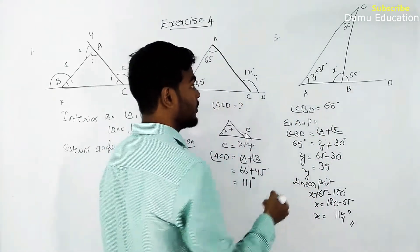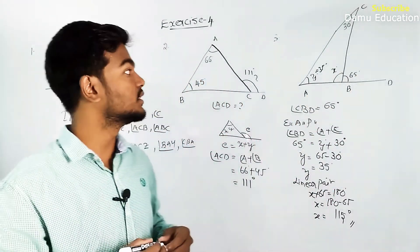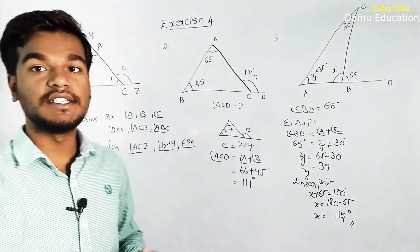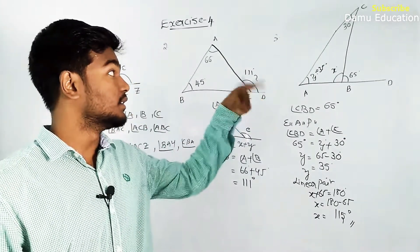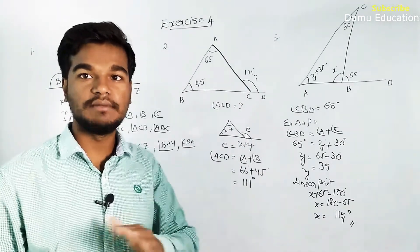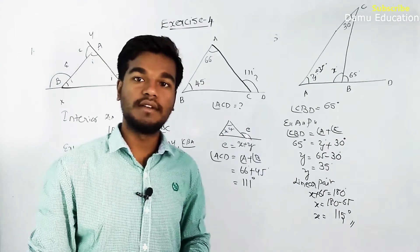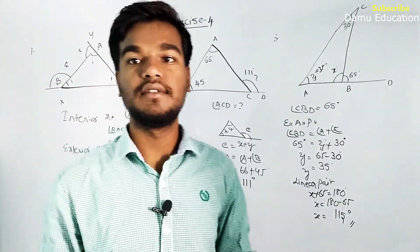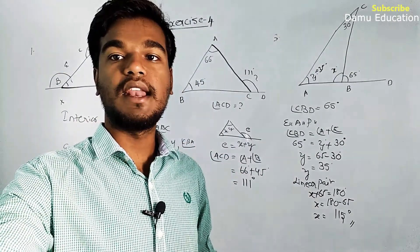Another method is the angle sum property of a triangle: x plus 35 degrees plus 30 degrees equals 180 degrees. So 35 plus 30 equals 65, and 180 minus 65 gives us 115 degrees. Thanks for watching this video, please click subscribe and click the bell.